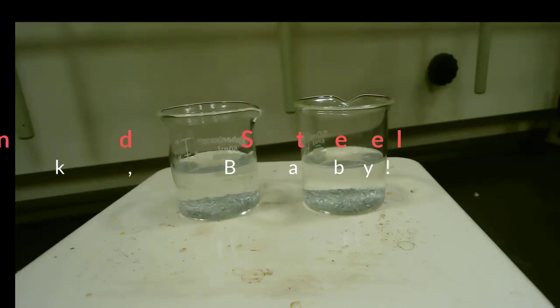Here we have two beakers of zinc granules coating the bottom, and we've added 25 milliliters of our 3 molar NaOH. We're heating to boiling on this hot plate, at which point we will drop in our copper samples.